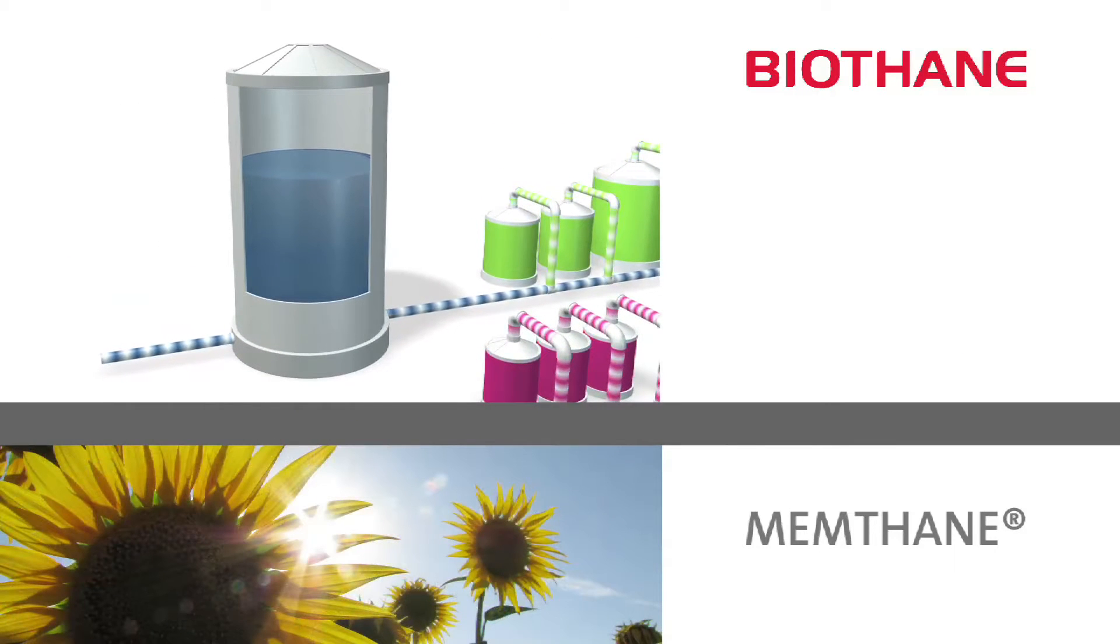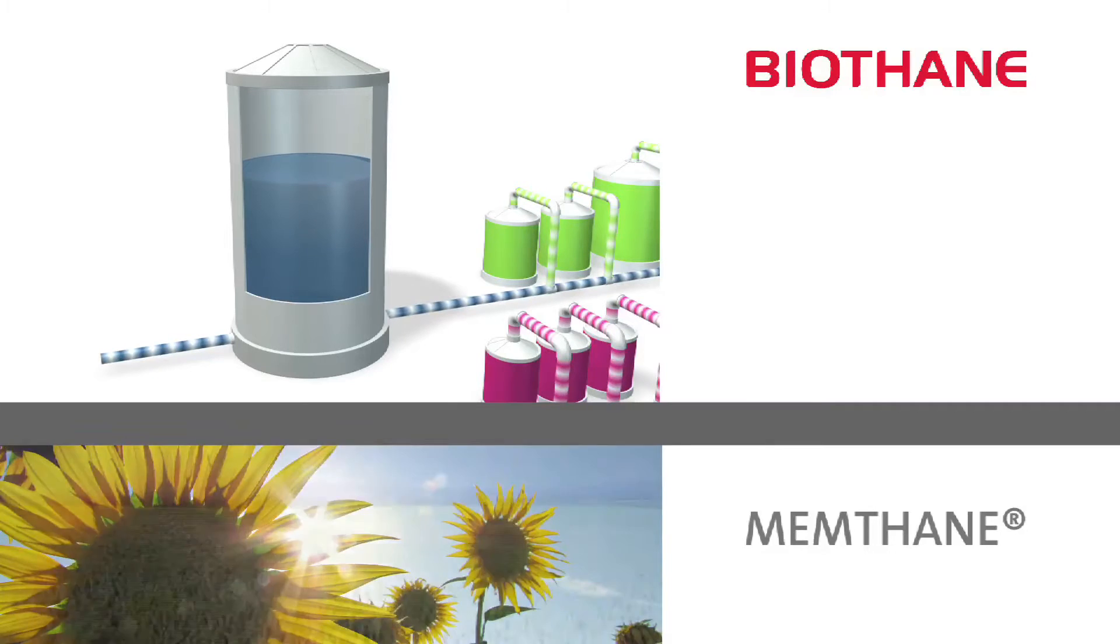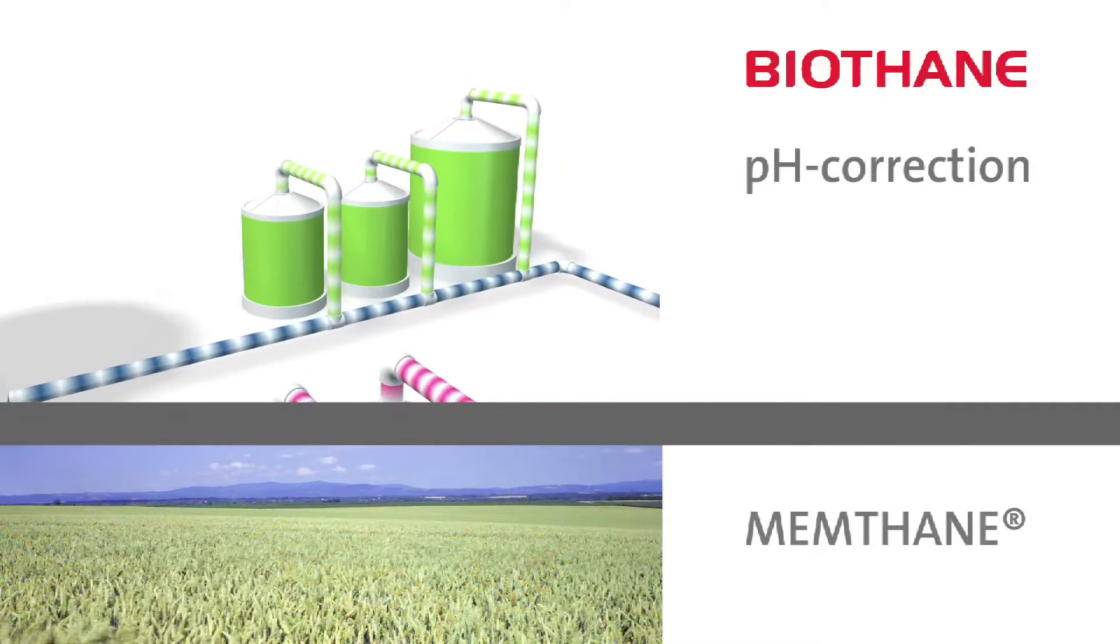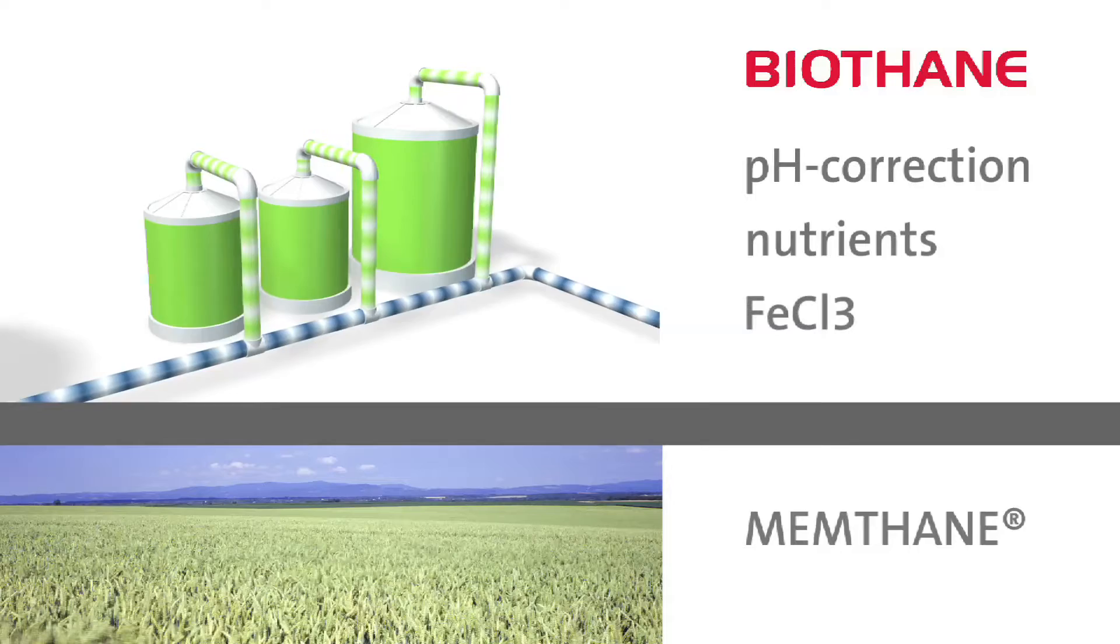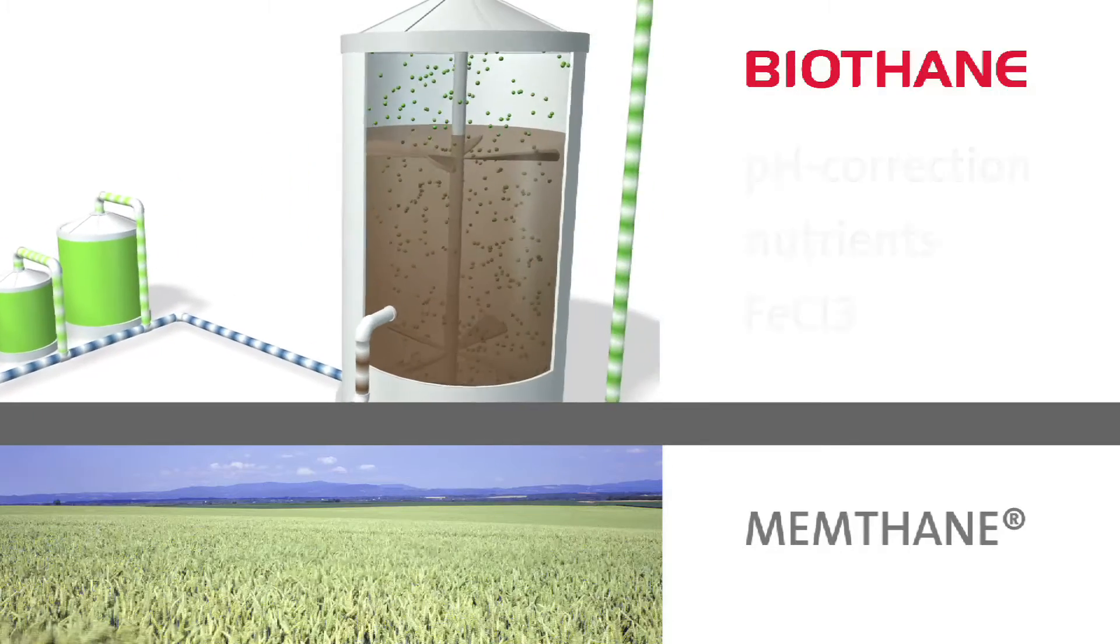The wastewater is stored in a hydraulic buffer tank. After pH correction and if required dosing of nutrients the wastewater is pumped to the anaerobic bioreactor.